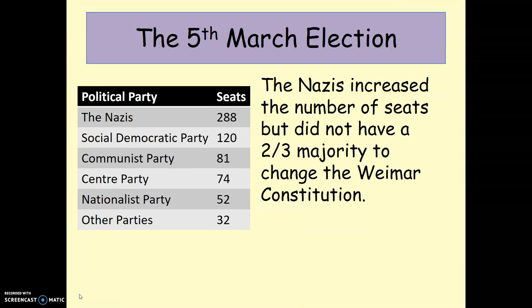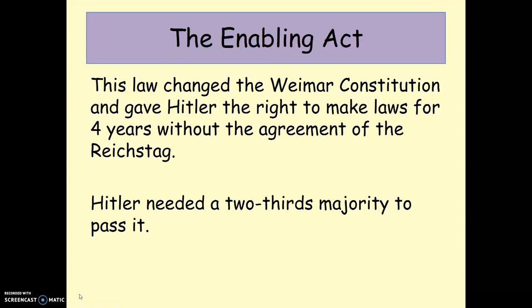Only a few days after the Reichstag fire, there were the 5th of March elections, and the Nazis managed to get 288 seats. This was really the last election of Nazi Germany. Although the Nazis did get 288 seats, it probably wasn't a particularly fair election because there was quite a lot of voter intimidation. The fact that the Communist Party still got 81 seats showed there was a lot of support for them. However, Hitler didn't have the two-thirds majority — the 66% of seats required to actually change the Weimar Constitution, which he needed to set up a dictatorship.